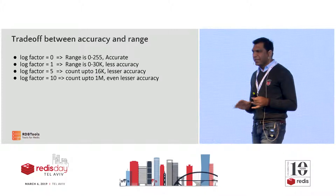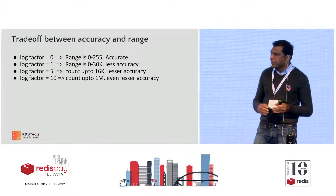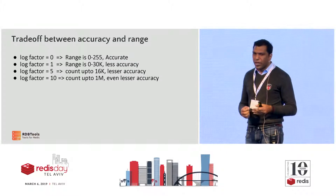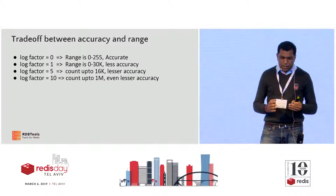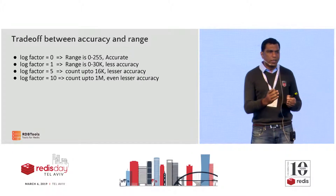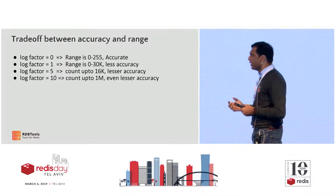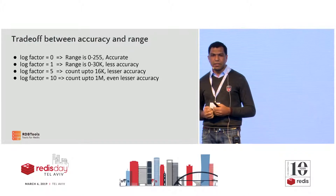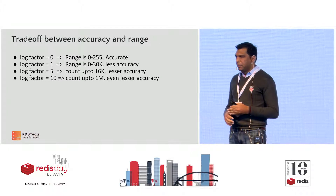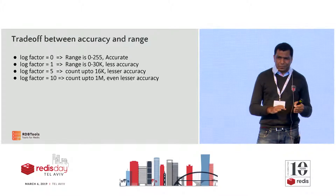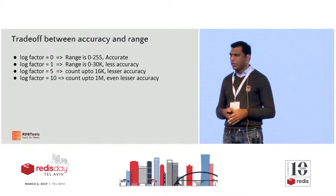If the log factor is 0, it's no longer a probabilistic counter — it is actually counting the real frequency, so the range is 0 to 255 and accuracy is highest. As you increase the factor, the range increases: a log factor of 1 lets you count up to 0 to 30,000, but it's less accurate. The default is log factor 10, which means you can roughly count up to about 1 million accesses to your key, but of course it is less accurate. That's the theory behind this parameter.